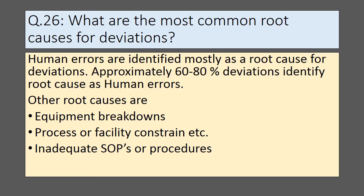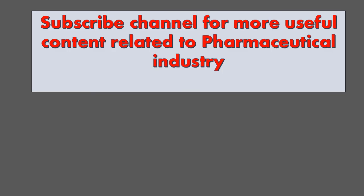What are the most common root causes for deviation? Human errors are identified as the most common root cause in deviation investigations — approximately 60 to 80 percent of deviations identify human error as a root cause. Other common root causes include equipment breakdowns, process or facility constraints, and inadequate SOPs or procedures. Subscribe to the channel for more useful content related to the pharmaceutical industry.